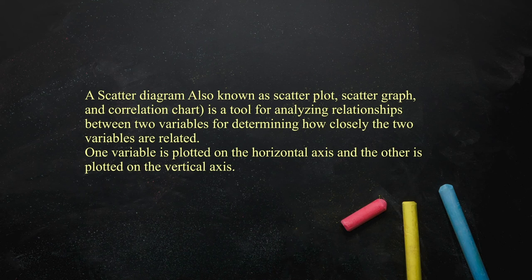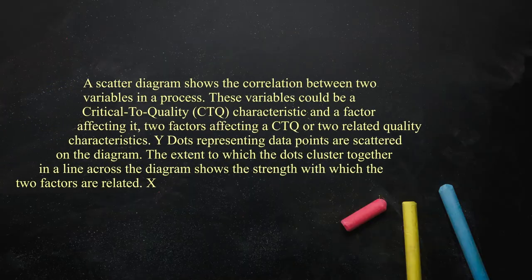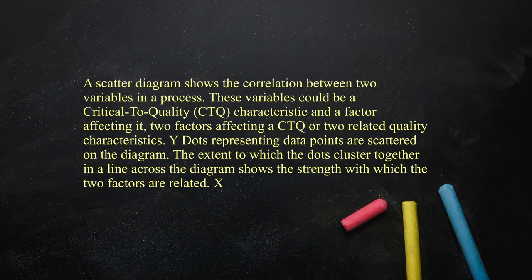One variable is plotted on the horizontal axis and another is plotted on the vertical axis. So if we have two variables x and y, x could be on the x-axis and y on the vertical axis. The scatter diagram shows the correlation between two variables in a process.